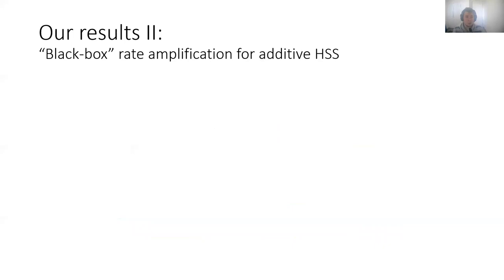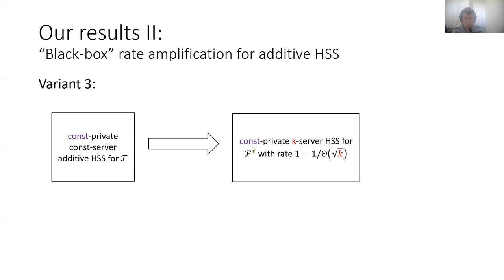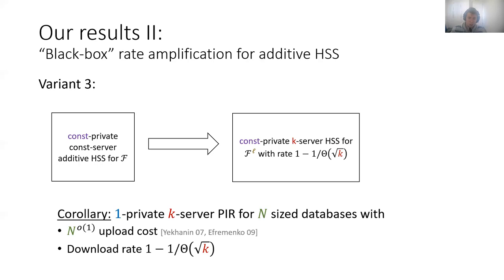Moving on to a third variant of this black-box approach, we show how to start from some additive HSS and convert it to an HSS with the same amount of privacy and K servers such that the rate is 1 minus 1 over theta of square root of K. The main motivation here is to obtain a PIR protocol for N-size databases where the upload cost is subpolynomial in N. Since these PIR constructions don't follow from HSS for non-degree polynomials, we use the black-box approach to obtain a PIR construction where the rate approaches 1.